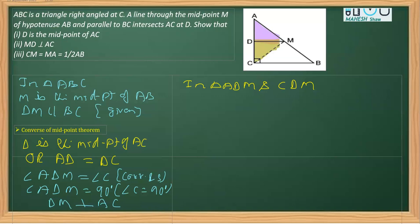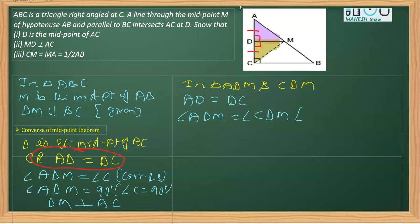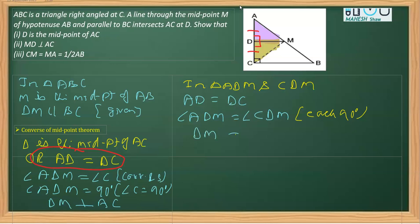In these two triangles, we already know that AD is equal to DC — that was proved in Part 1. Further, since DM is perpendicular to AC, it makes 90 degrees on either side, so angle ADM is equal to angle CDM, and the reason is each is 90 degrees. Additionally, DM is equal to MD, which is the common side.